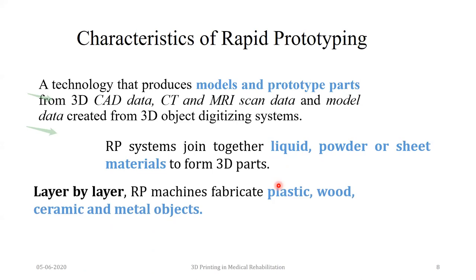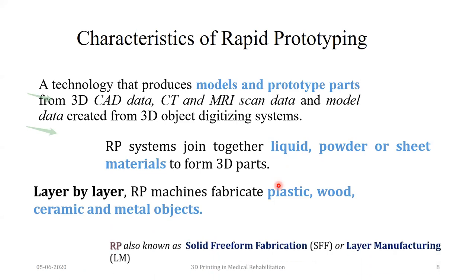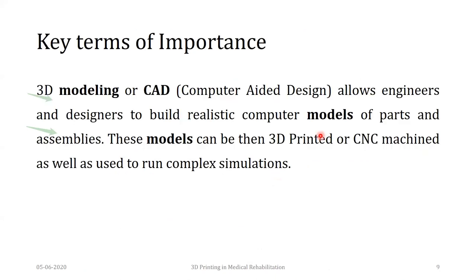We also call it layer-by-layer manufacturing. In general literature you will find the terms: layered manufacturing, solid free-form fabrication, rapid prototyping, and 3D printing — these are all different synonyms for what we call rapid prototyping. The key terms of relevance to us are: 3D modeling or computer-aided design modeling, which is basically a design philosophy that allows engineers and designers to build realistic computer models of the part of interest — or assemblies like a car which is a complete system with many components.